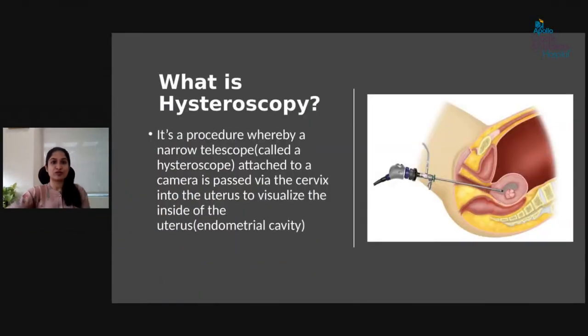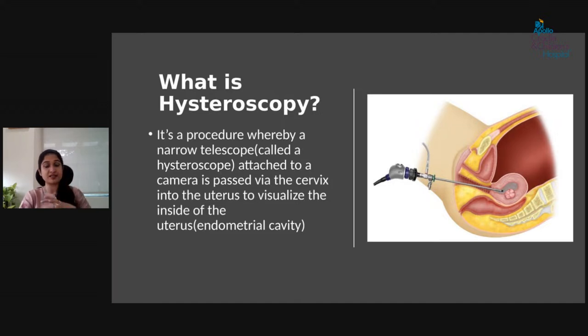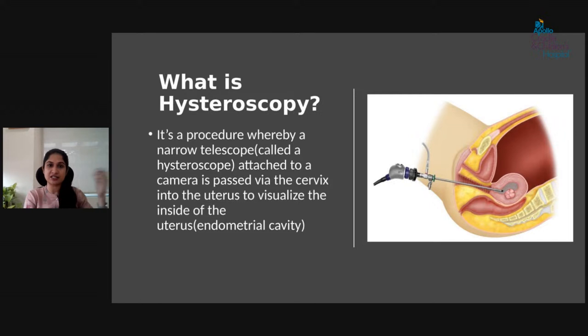Good afternoon. Let us start with what is hysteroscopy. It is a procedure where you send a telescope inside the uterus through the cervix and visualize what is happening inside the uterus. The word itself means: 'hystero' is uterus and 'scopy' means using a scope to see inside. The telescope is inserted into the uterus, attached to a screen, and we can operate while viewing the screen.